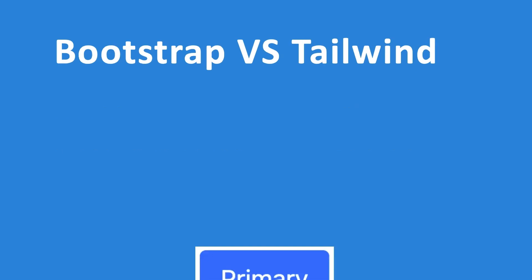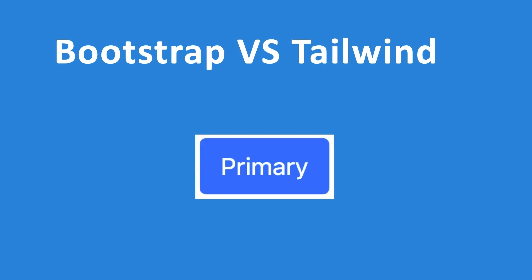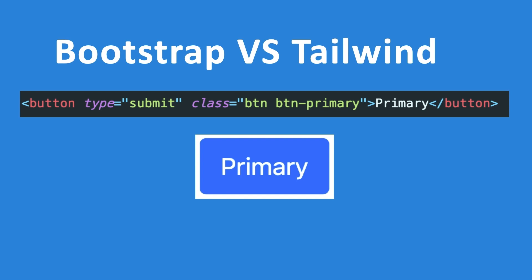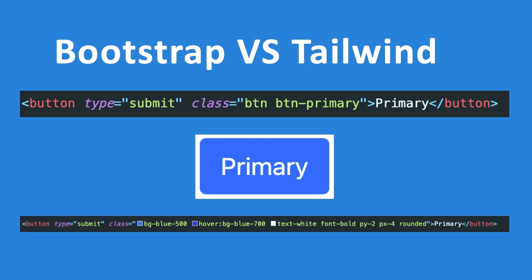Let me show you an example in code. Let's say you want to create a primary button. In Bootstrap, you create a button with classes btn and btn-primary. If we create the same button in Tailwind, the class name is a bit longer — you have a background color of 500, a hover state, text-white, font-bold, padding y-axis 2, padding x 4, and border-rounded. Bootstrap looks simpler, but the btn class is predefined.